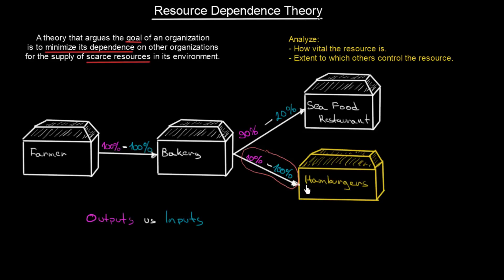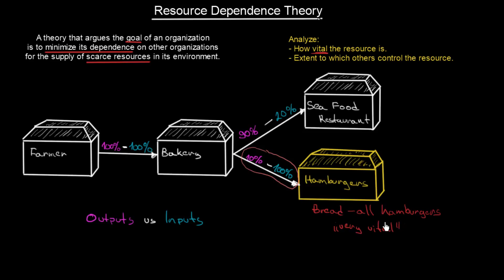Now we are getting to Resource Dependence Theory. To analyze our company according to this theory, we have to think of two things. First, how vital the resource is for us — in this case it's bread, which is used in all of our hamburgers, so the resource is very vital. If it were cucumbers, which are only used in some hamburgers, it would not be vital — because if we run out of cucumbers, nothing really happens. But if we run out of bread, we are in big trouble.